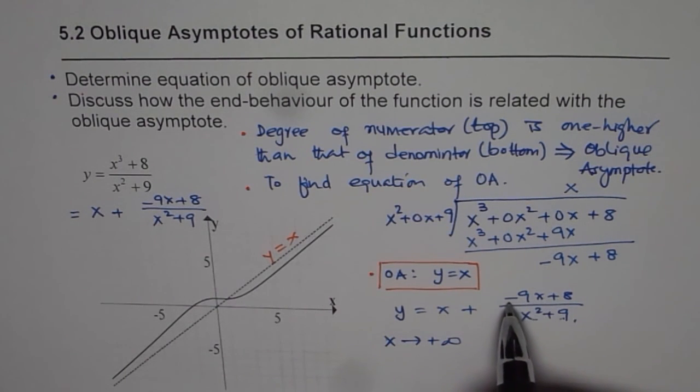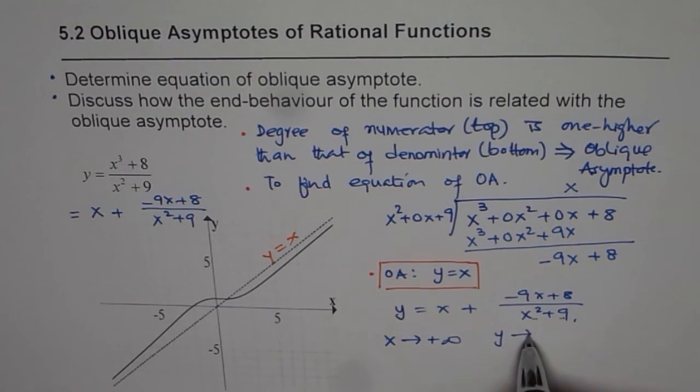However, in the numerator we have minus 9 times large value, so we get a negative value. So y approaches x but from bottom, so it is less than x.